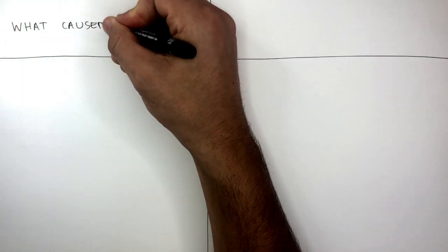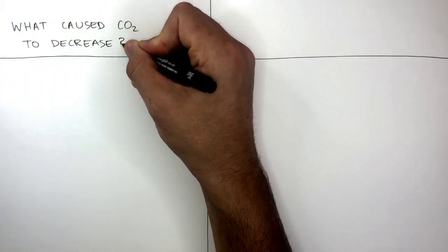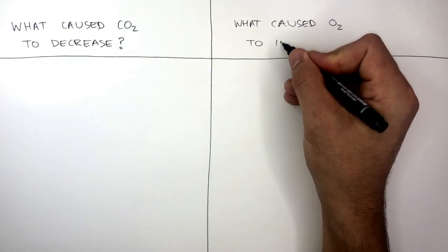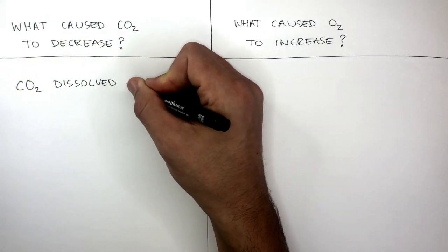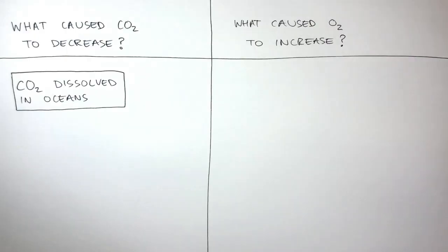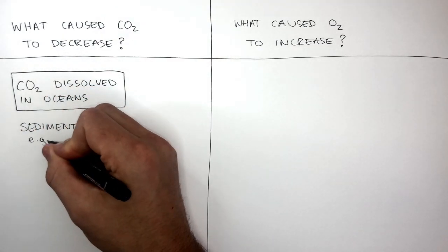In this table, we're going to compare what caused carbon dioxide to decrease and what caused oxygen to increase. Natural processes which caused carbon dioxide levels in the atmosphere to decrease include carbon dioxide dissolved in oceans. Carbon dioxide dissolving in the oceans then led to the formation of sedimentary rocks such as limestone.